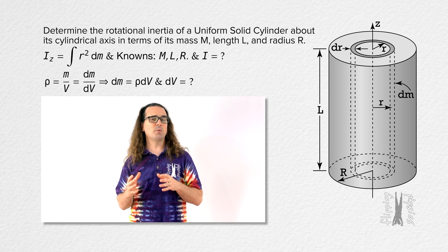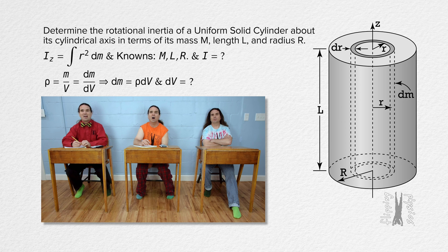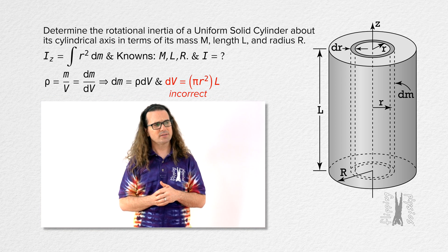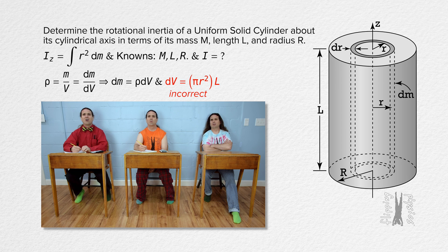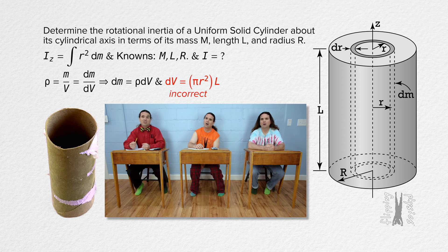What is the volume of dV equal to? Well, dV is a cylinder, so area of the base times the height — pi times lowercase r squared times capital L. Actually, Billy, that is not correct. The shape of dm is not a solid cylinder; the shape of dm is a thin hollow cylinder, like a thin toilet paper holder. So the volume of a thin hollow cylinder is... the circumference of the circle times the height? 2 pi times lowercase r times capital L.